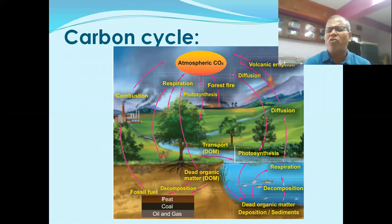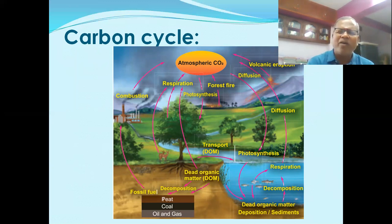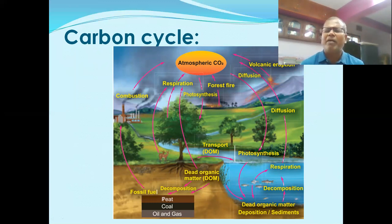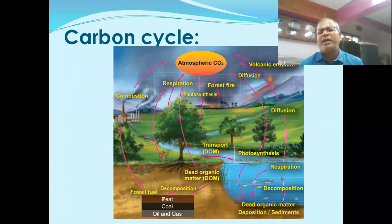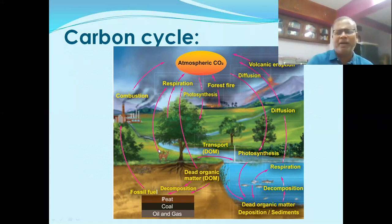Plants are the producers of an ecosystem. They fix atmospheric carbon dioxide through photosynthesis. During respiration, carbohydrates are oxidized and carbon dioxide is released back to the atmosphere. Respiration involves oxidation of carbohydrates, release of energy in the form of ATP, liberation of carbon dioxide, and formation of water. The carbon dioxide is released back to the atmosphere.